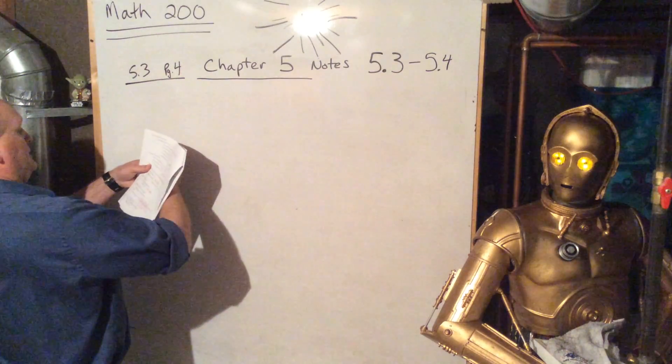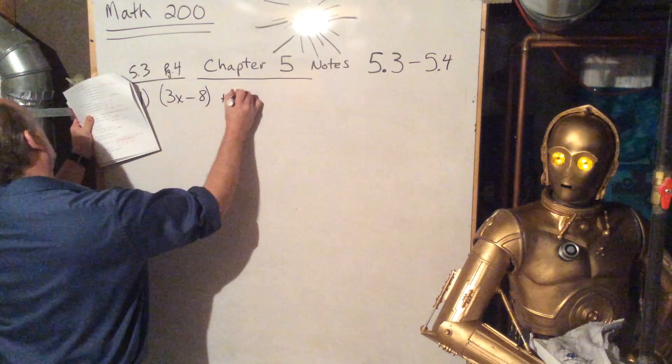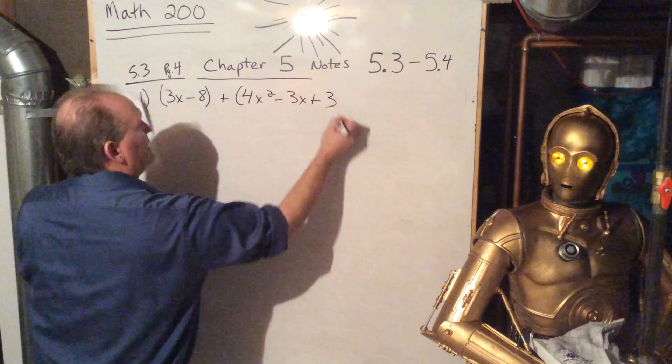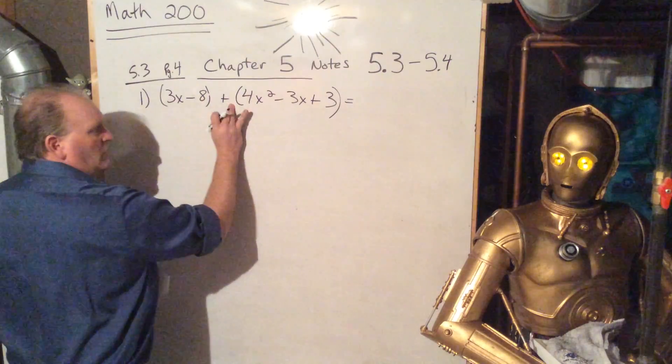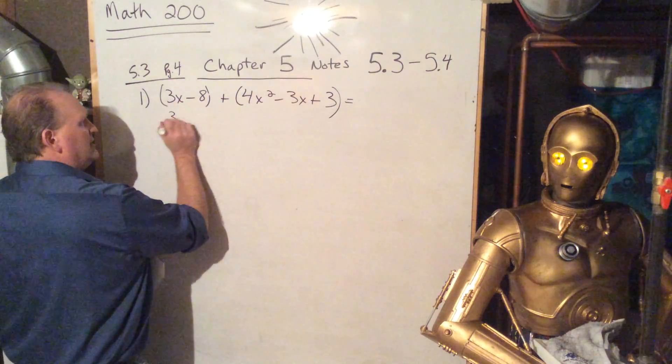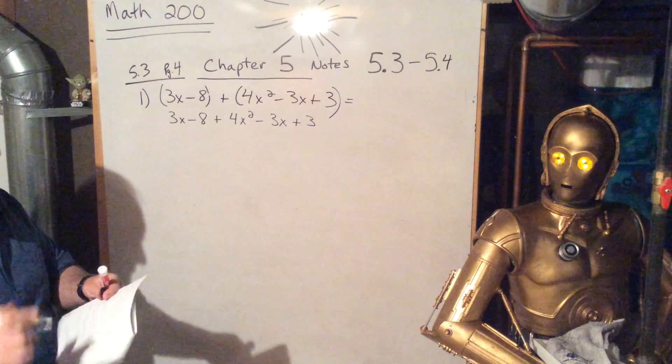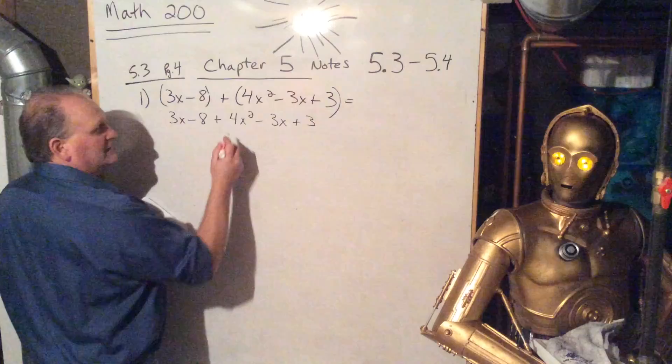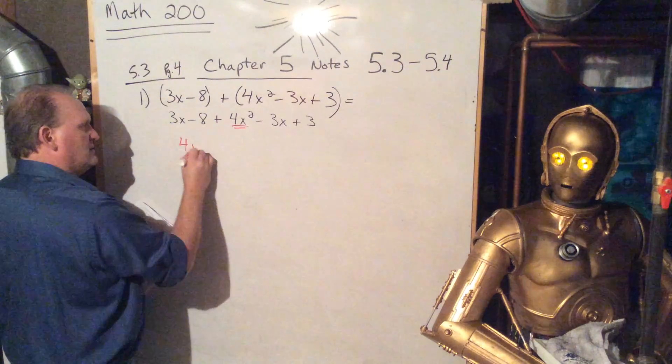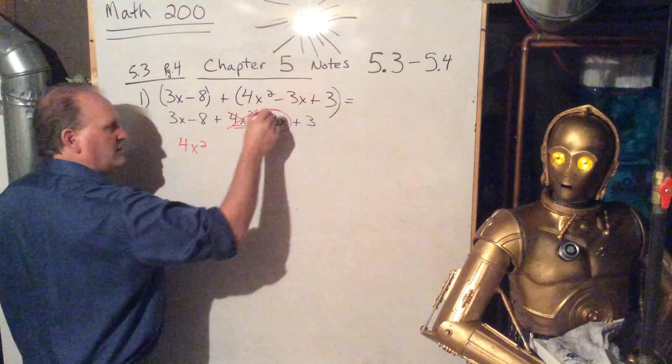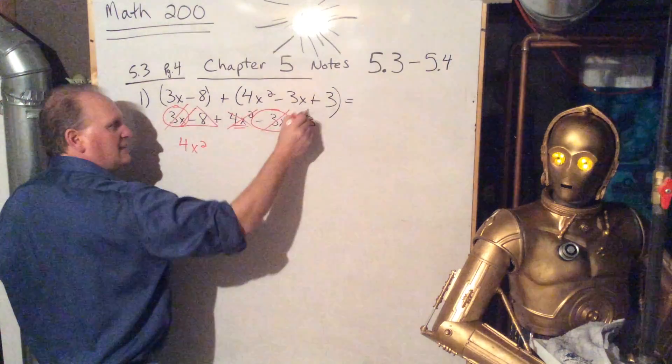So let's take a look at example number one. They want me to add 3x minus 8 quantity 3x minus 8 plus quantity 4x squared minus 3x plus 3. And so now this one, they have parentheses around that and around that, but they're really useless because we're not distributing anything. There's a 1 there. There's a 1 there. If I multiply it out, basically nothing happens. And we just have the exact same thing without any parentheses. And so now we're just combining like terms. So let's combine. Let's first look at the leading coefficient, the big dog. The highest power you see there is a 2. So this one would be first. So we'll look at that first.